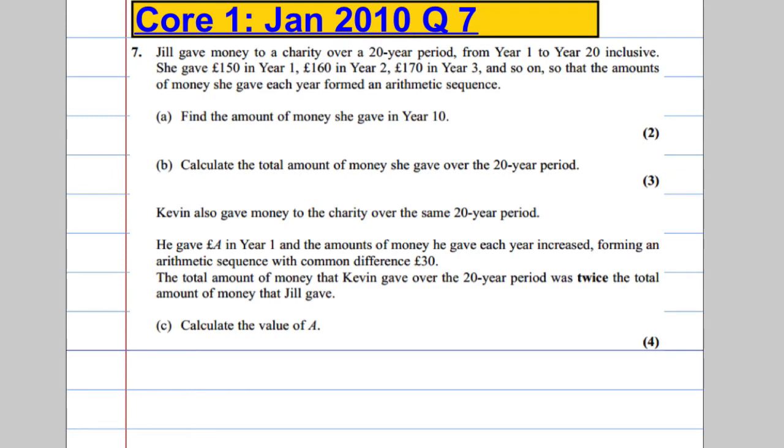Question 7. Jill gave money to charity over a 20-year period from year 1 to year 20 inclusive. She gave £150 in year 1, £160 in year 2, £170 in year 3 and so on, so that the amounts of money she gave each year formed an arithmetic sequence. Find the amount of money she gave in year 10.